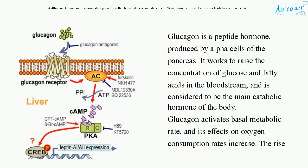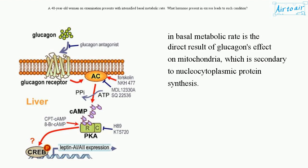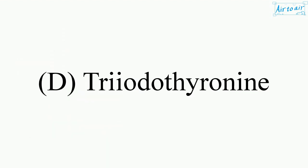Glucagon is a peptide hormone produced by alpha cells of the pancreas. It works to raise the concentration of glucose and fatty acids in the bloodstream, and is considered to be the main catabolic hormone of the body. Glucagon activates basal metabolic rate, and its effects on oxygen consumption rates increase. The rise in basal metabolic rate is the direct result of glucagon's effect on mitochondria, which is secondary to nucleocytoplasmic protein synthesis. The answer is D. Triiodothyronine.